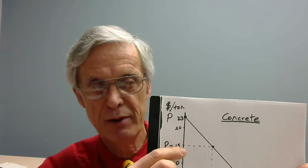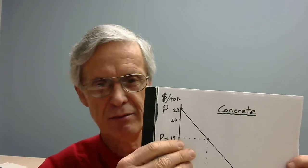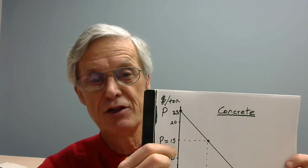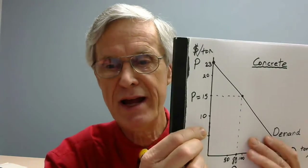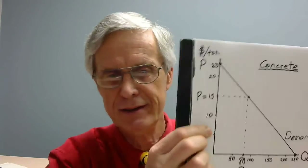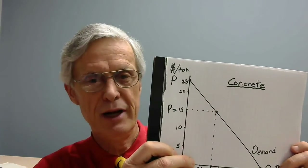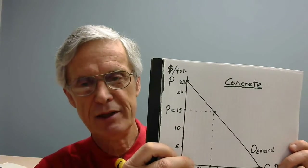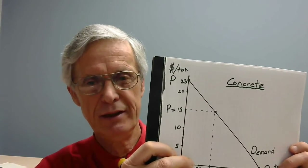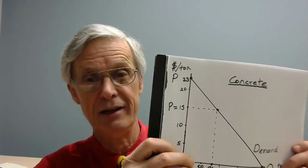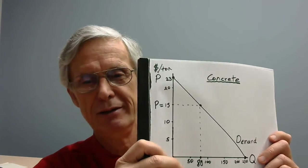Someone out there is willing to pay $22.99 for this good. Whether they have to or not depends on market conditions, but according to this demand line, someone would purchase some concrete for just under $23. For example, if they're able to purchase at $15, they enjoy a gain from trade. For buyers, this gain from trade is often called consumer surplus — don't get that confused with a market surplus, which is measured in physical units. Consumer surplus is measured in dollars.